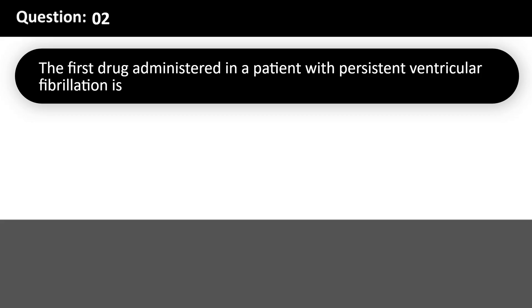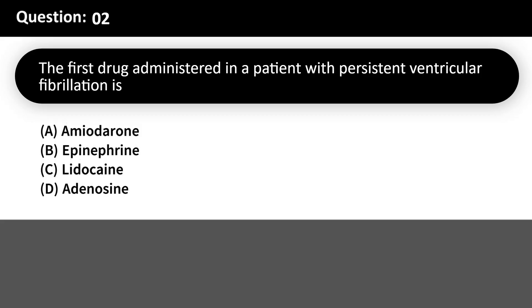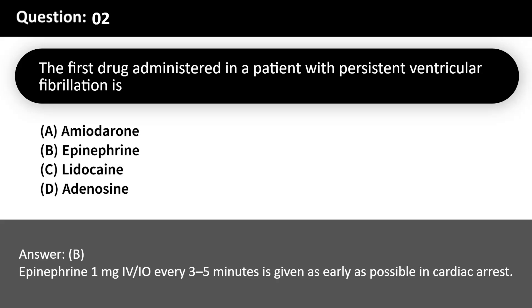The first drug administered in a patient with persistent ventricular fibrillation is: A. Amiodarone. B. Epinephrine. C. Lidocaine. D. Adenosine. Answer: B. Epinephrine 1mg IV/IO every 3-5 minutes is given as early as possible in cardiac arrest.